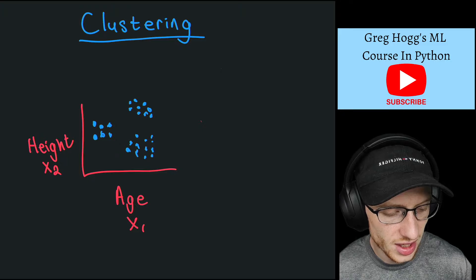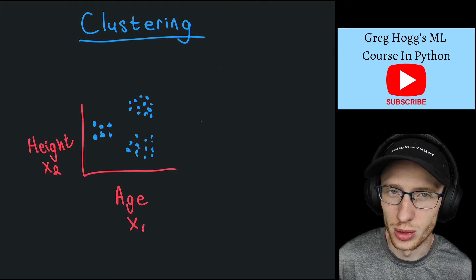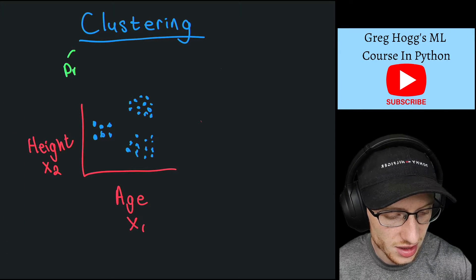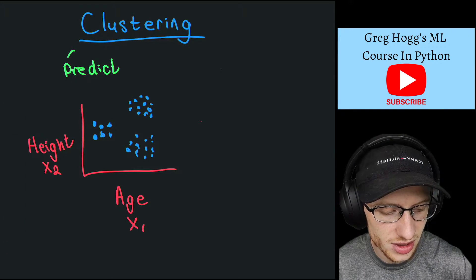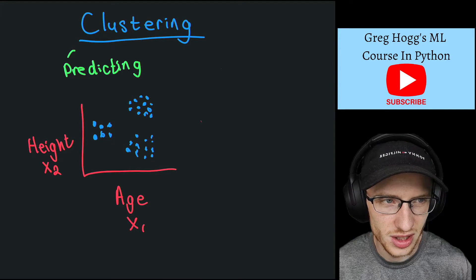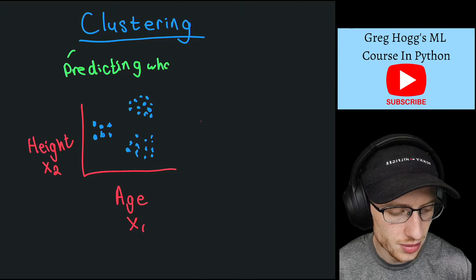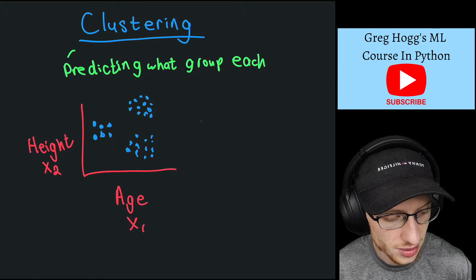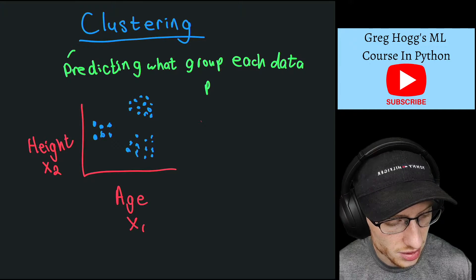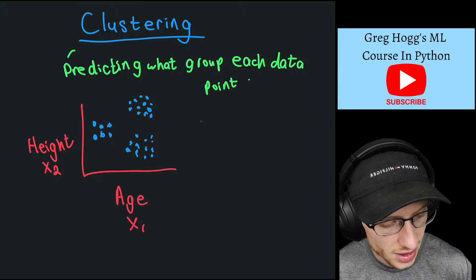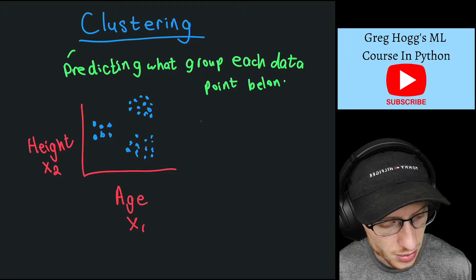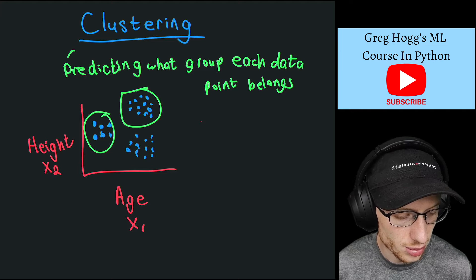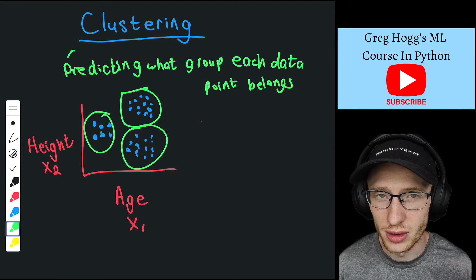What we do have instead is maybe different groups. So clustering is predicting, and yes, we're still kind of predicting, but it's not some sort of variable. It's just predicting what group something belongs to, what group each data point belongs to, and that's a lot different from trying to learn the pattern of what group these are, and then given some other people.